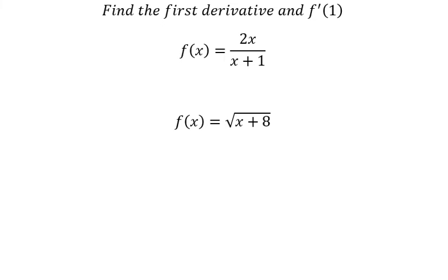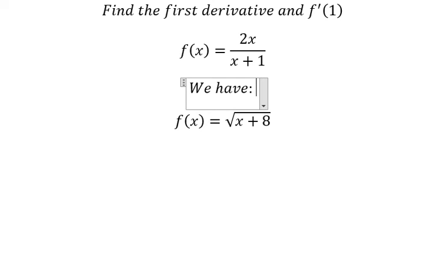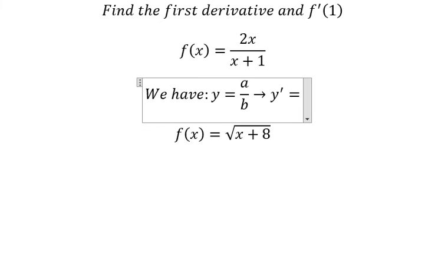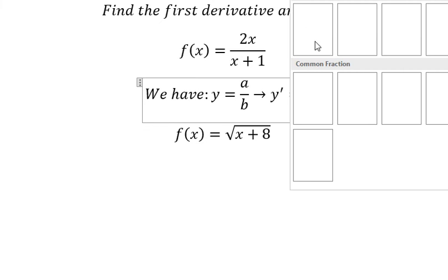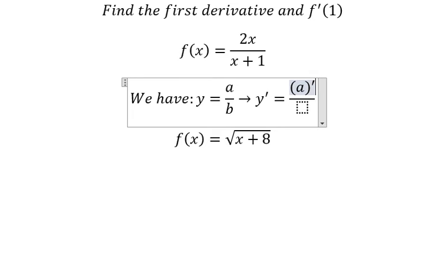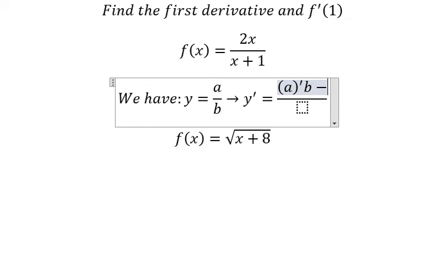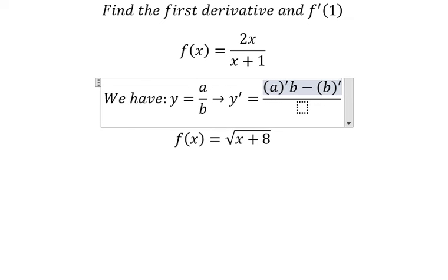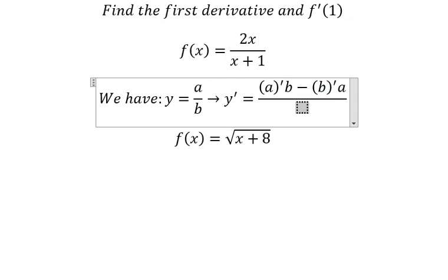We have the formula here. That's about y equals A over B. If we do the first derivative, we need to do first derivative of A multiplied by B, minus first derivative of B multiplied by A, all over B squared.